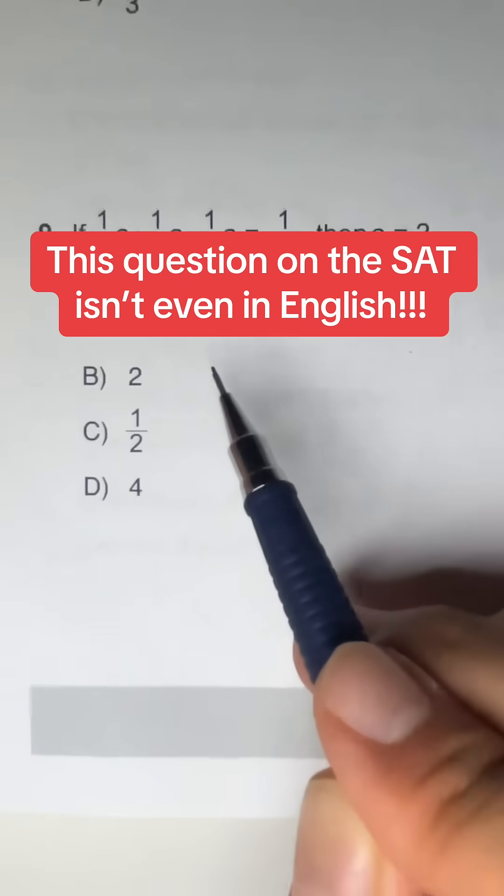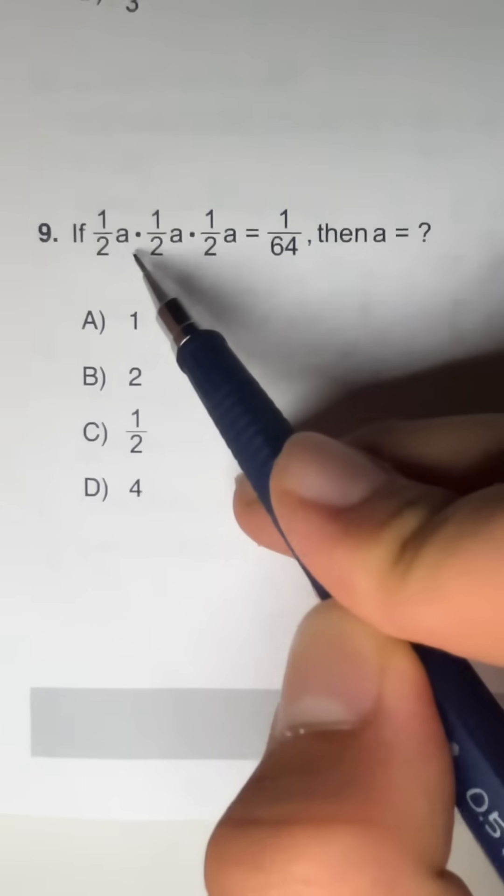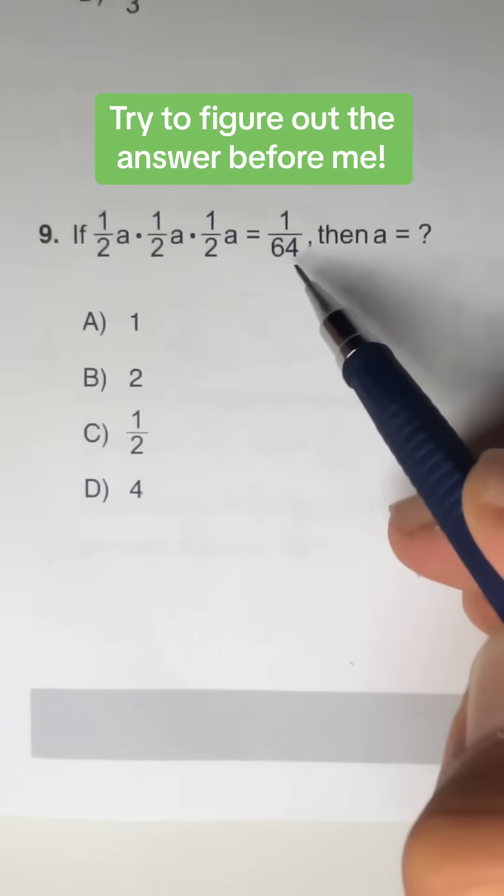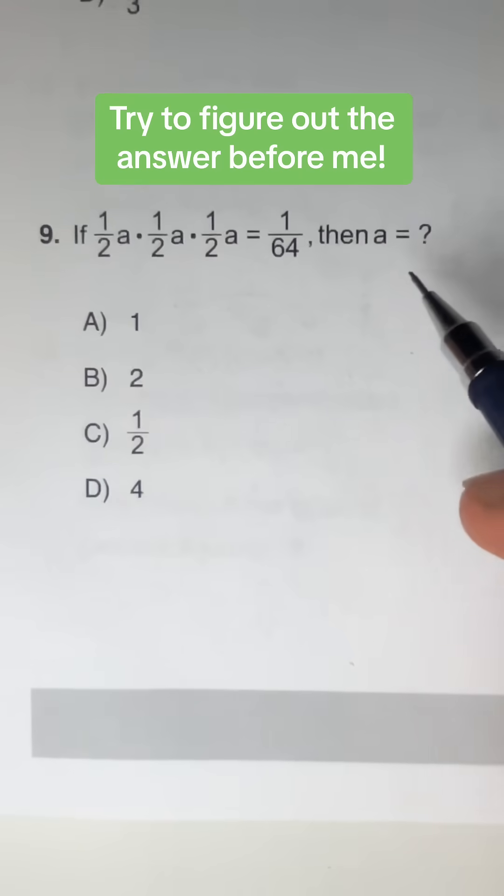This question on the SAT is not even in English. If 1 half of A times 1 half of A times 1 half of A is equal to 1 over 64, then A is equal to what?